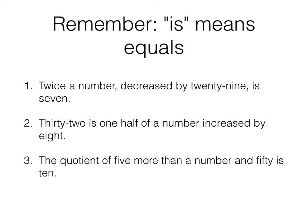Remember that is means equals. Twice a number decreased by 29 is 7. So when we read that twice a number, we know that's 2x decreased by 29 is, is my equal sign 7. So when we see that word is or some derivation of the word, the verb to be, is, was, something along those lines, you've got an equal sign.